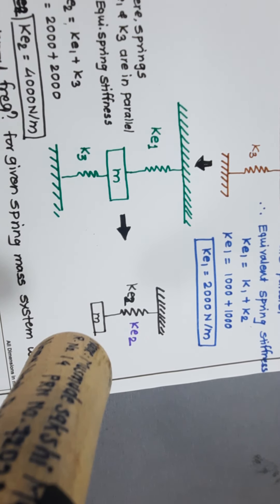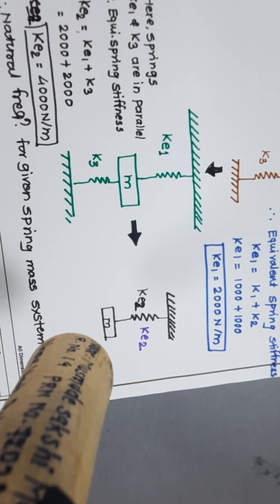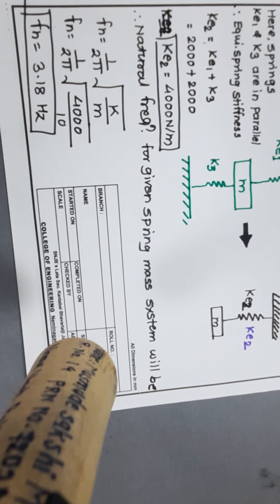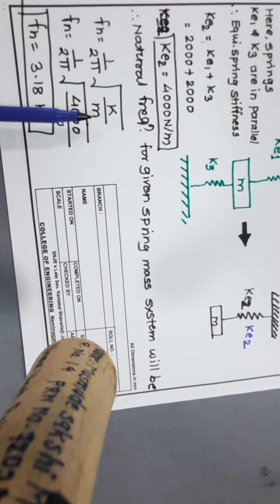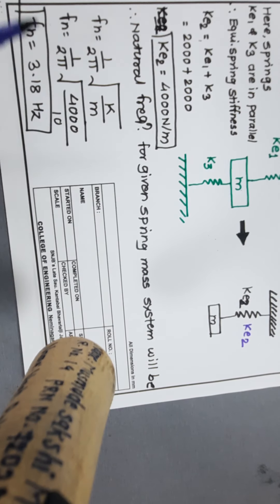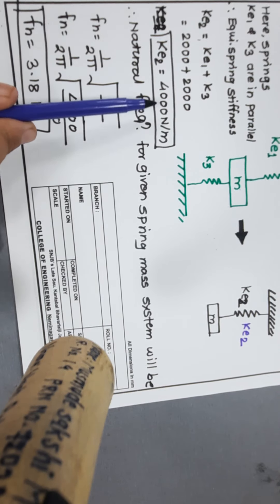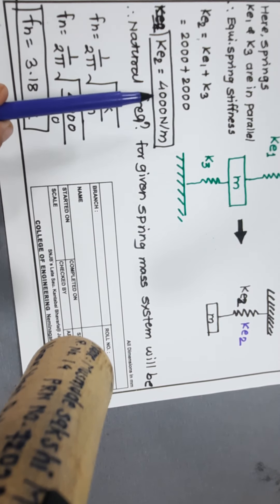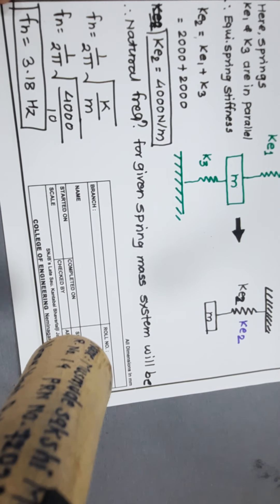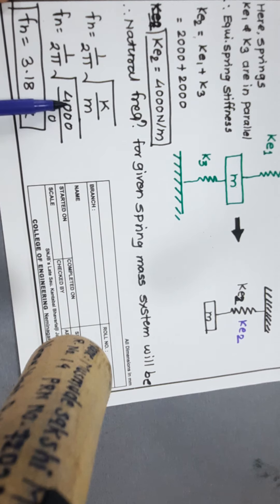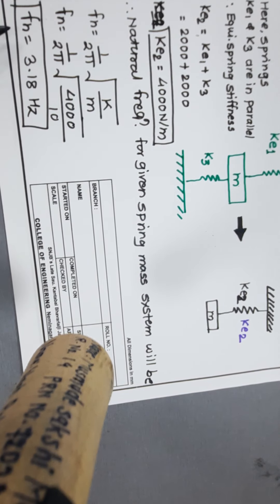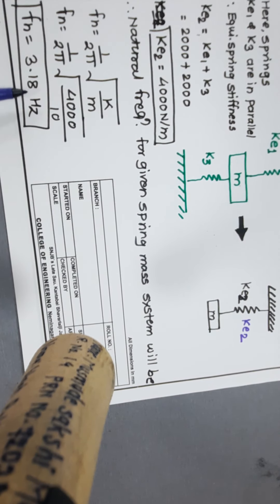Now, knowing ke2 = 4000 N/m and m = 10 kg, we calculate the natural frequency: Fn = (1 / 2π) × √(ke2 / m) = (1 / 2π) × √(4000 / 10). After solving this in the calculator, the natural frequency is 3.18 Hz.